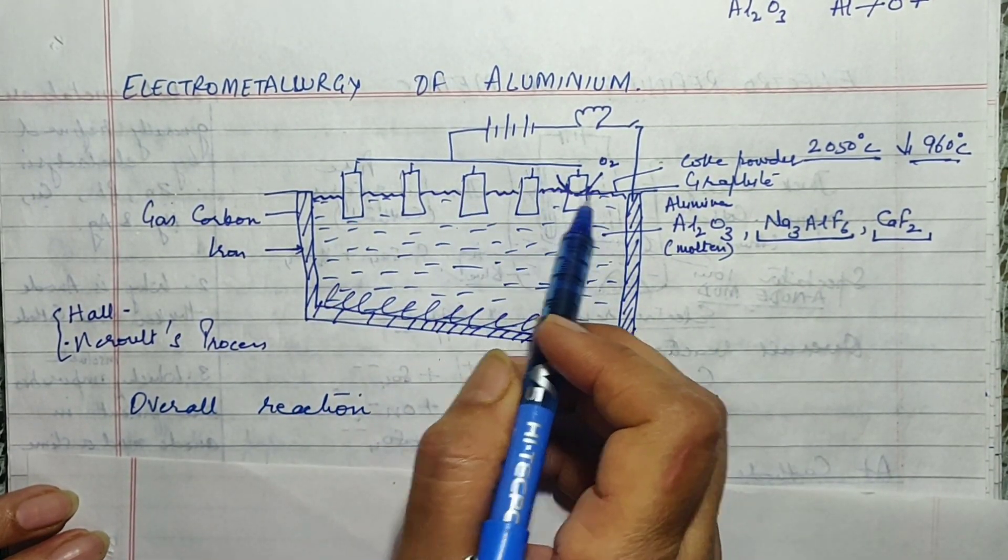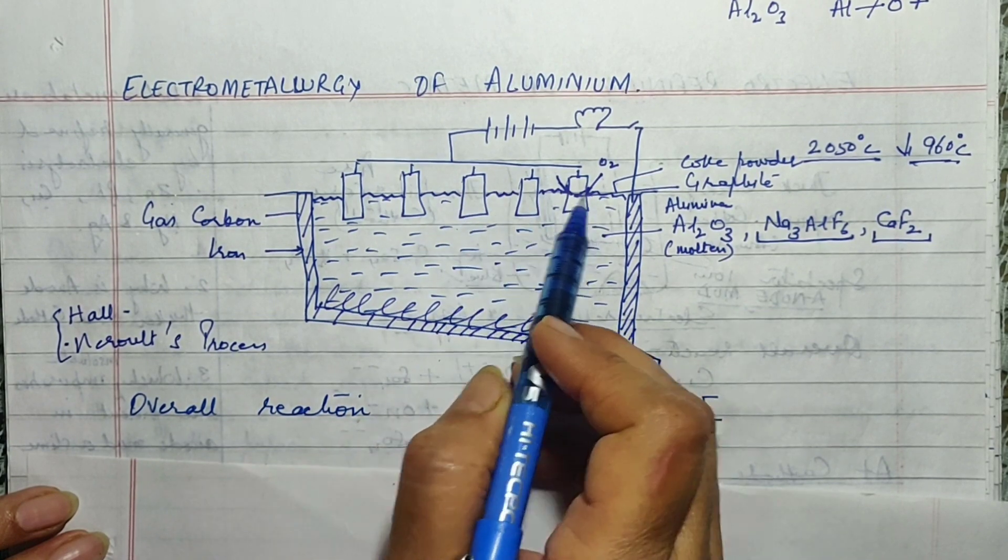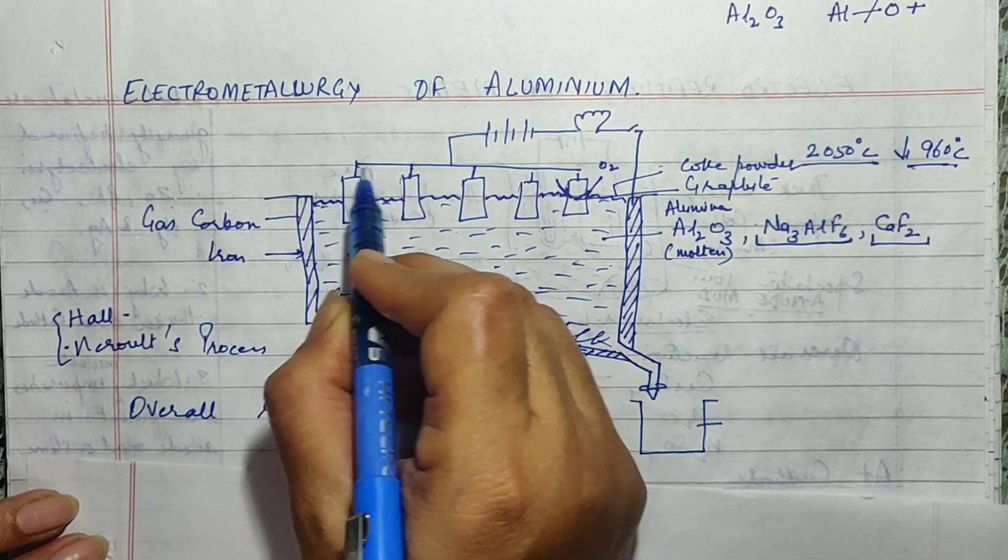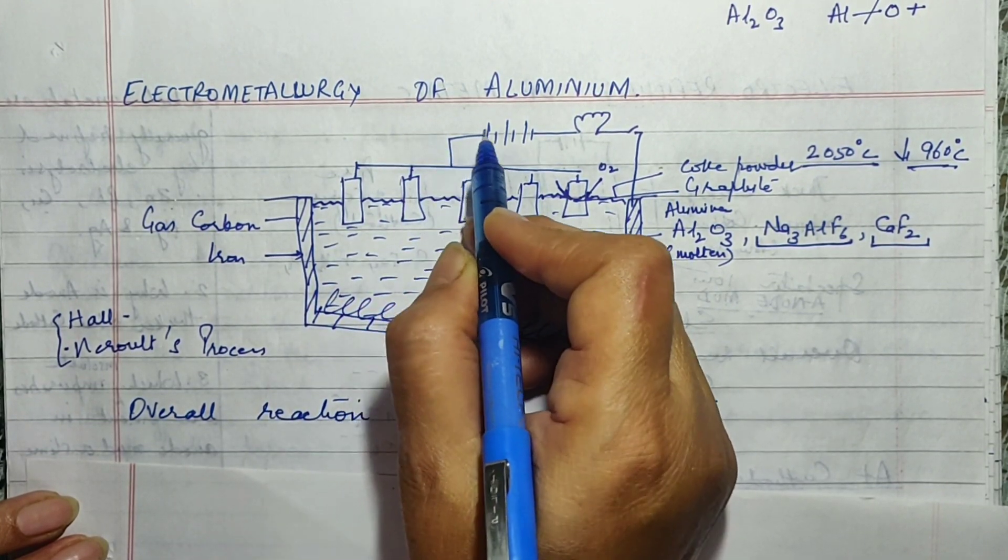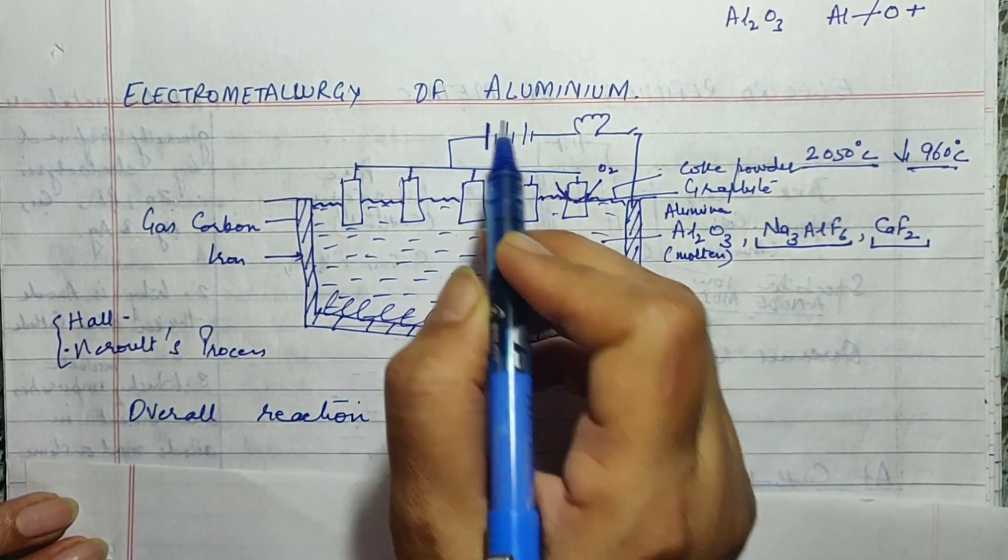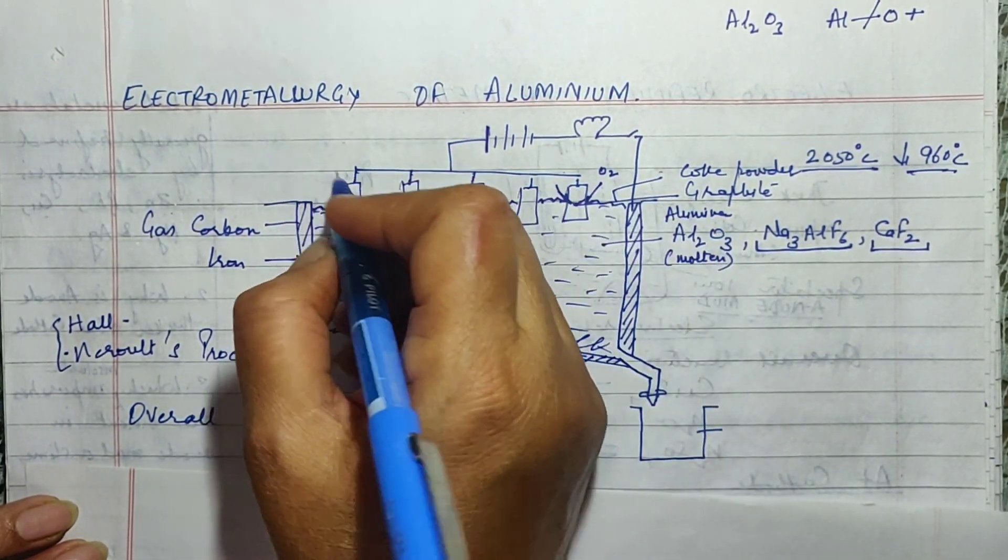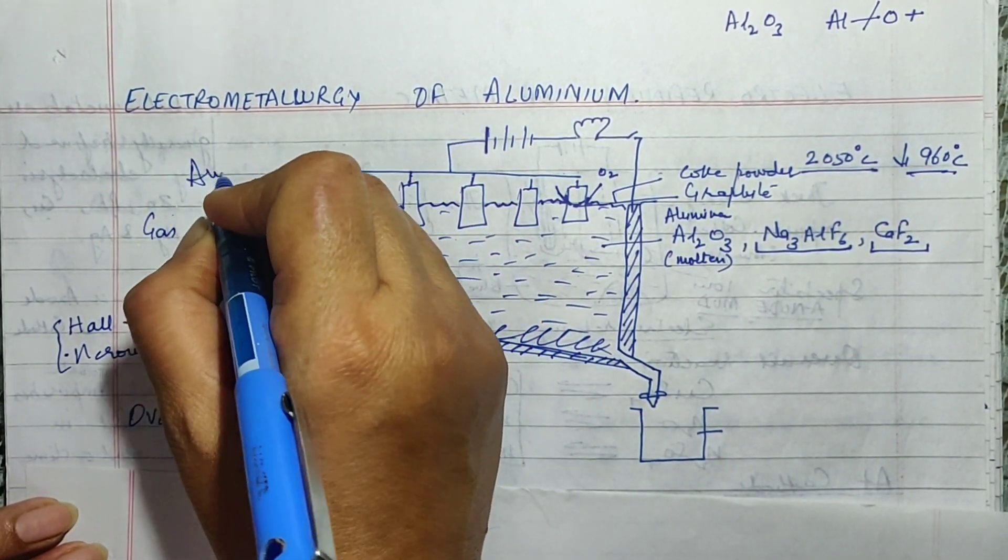Why do we take so many anode rods? Do you notice that 1, 2, 3, 4, I have taken 5 anode rods. All of them are first collected to one rod and then it is connected to the positive terminal of the battery. So with the result all these rods are acting as the anode rods, they are called anode rods.